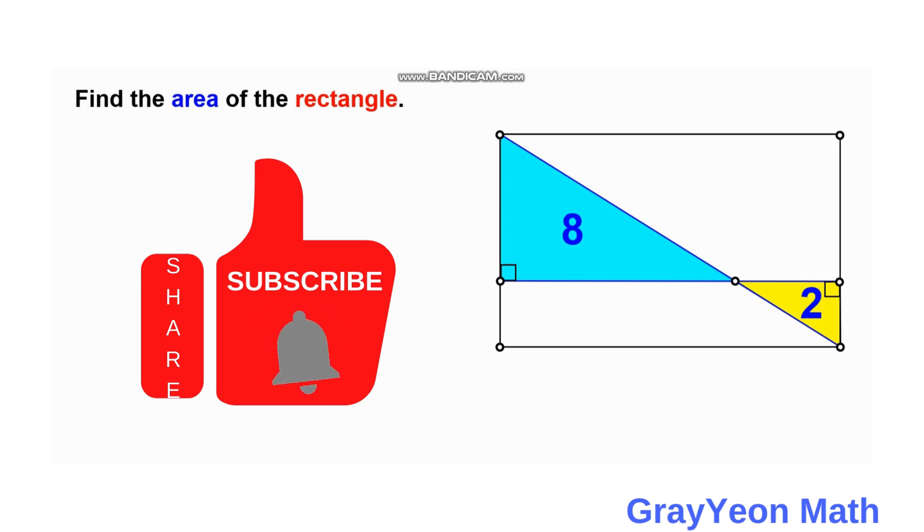Welcome to GrayeonMath. We are asked to solve this problem. We have this rectangle and inside this rectangle are two right triangles with an area of 8 square units for the blue and 2 square units for the yellow. And these two are actually similar triangles. And we are required to find the area of the rectangle.